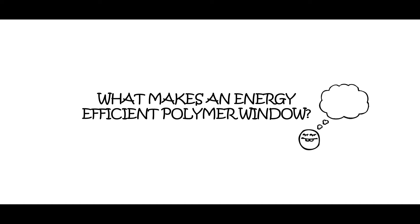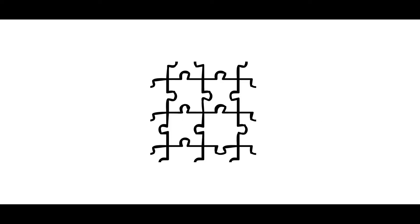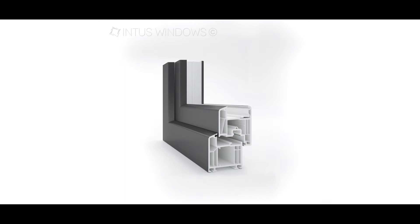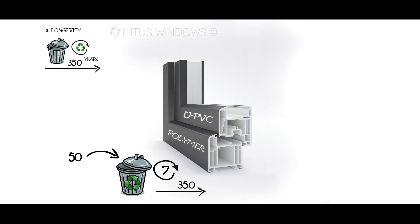What makes an energy-efficient polymer window? There are a few key components, but let's start with the frame. Window frames are made of polymer, also called UPVC. Windows last for around 50 years and can be recycled up to 7 times. That brings the longevity of material up to 350 years.